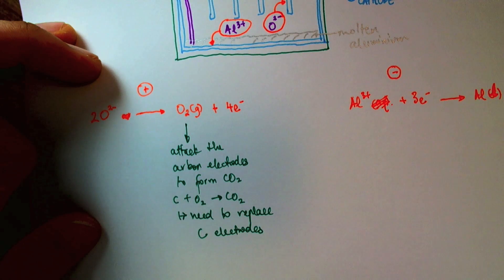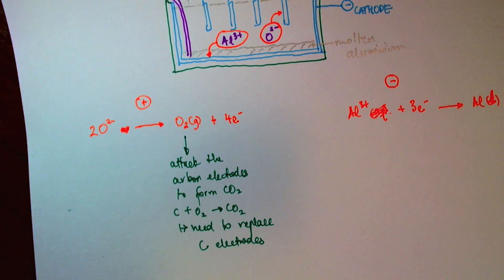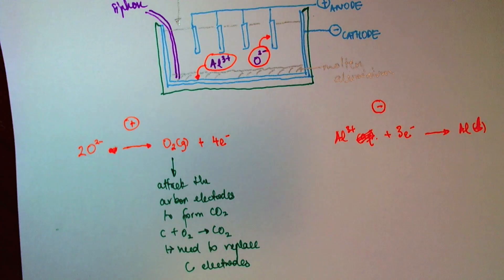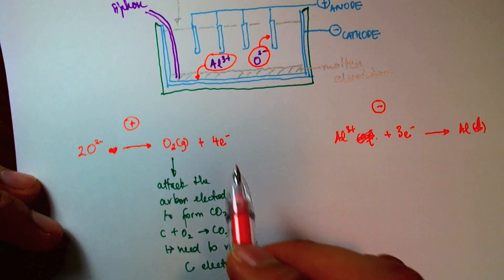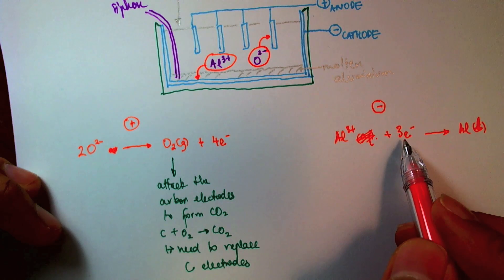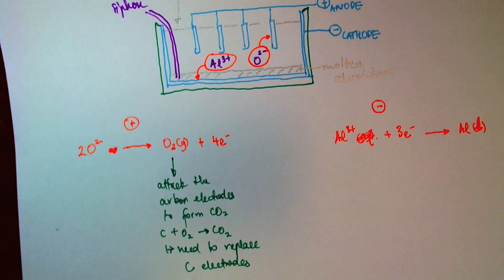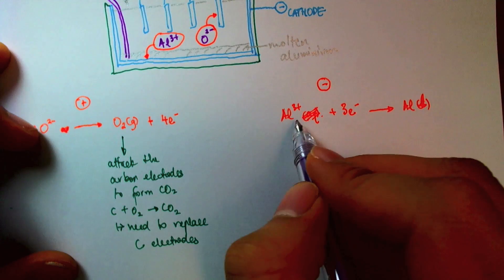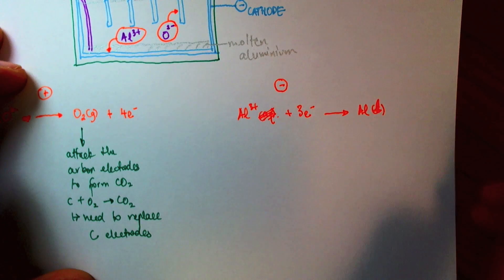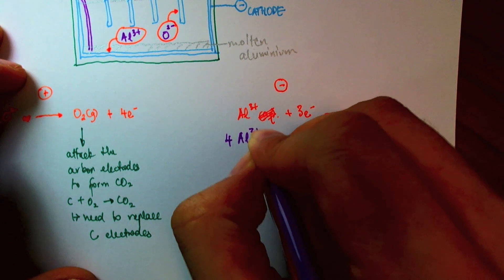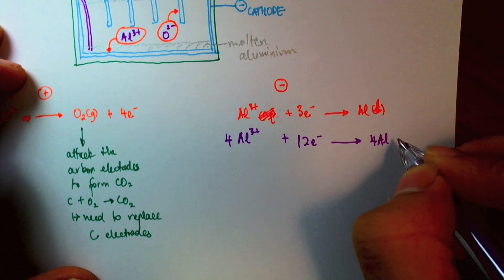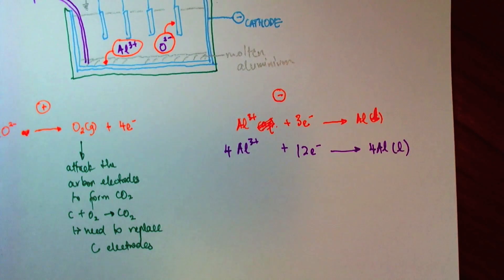Now let's write the complete equation right here. So remember to write the full equation, I need to balance the electrons. I have four electrons here and three electrons here. So what I'll need to do is multiply this equation by three and multiply this equation by four. If I multiply this by four, I get four Al³⁺ and 12 electrons, giving me four liquid aluminum.